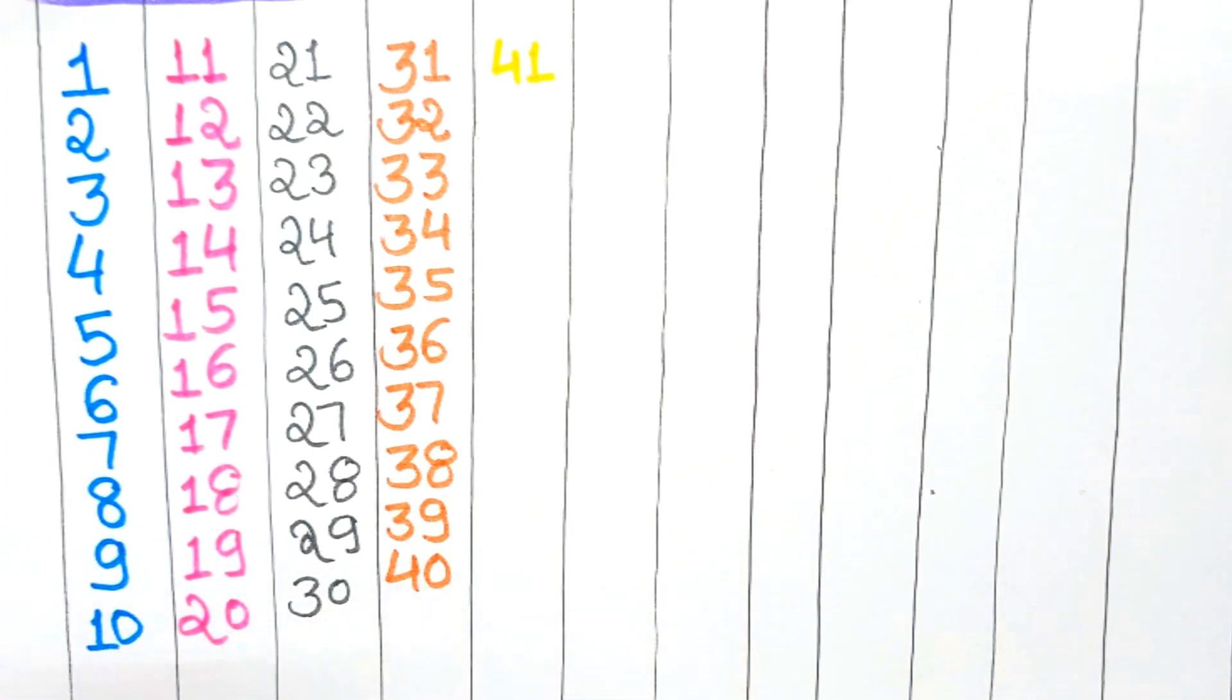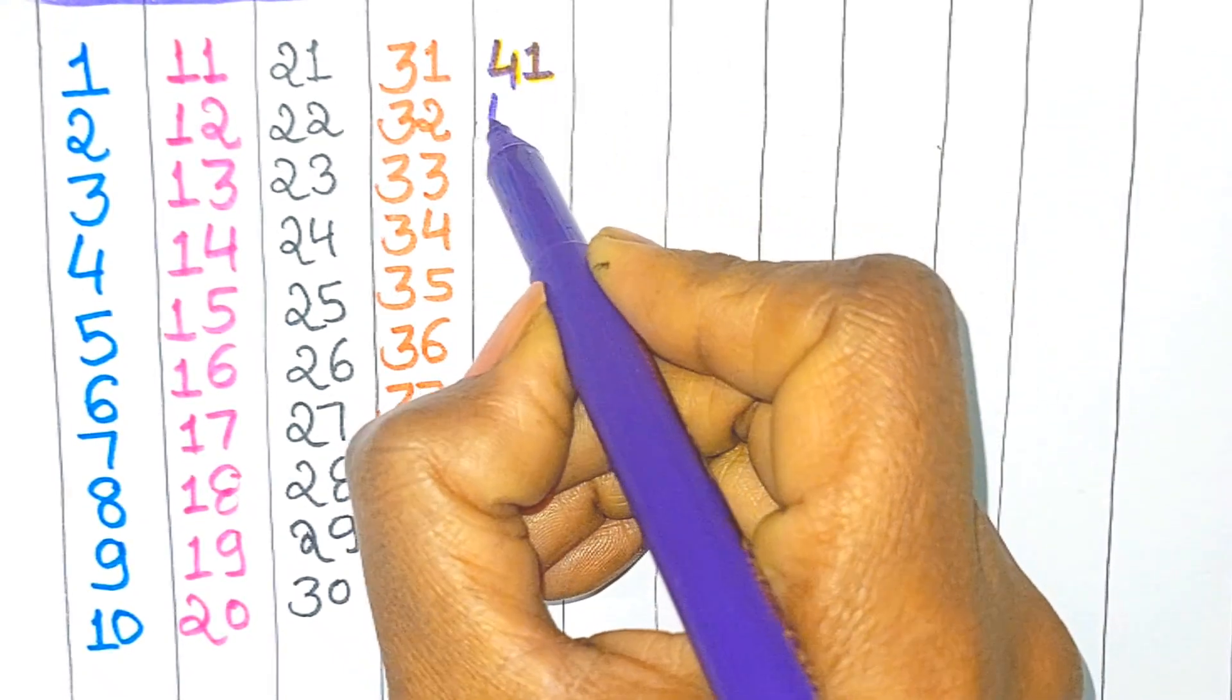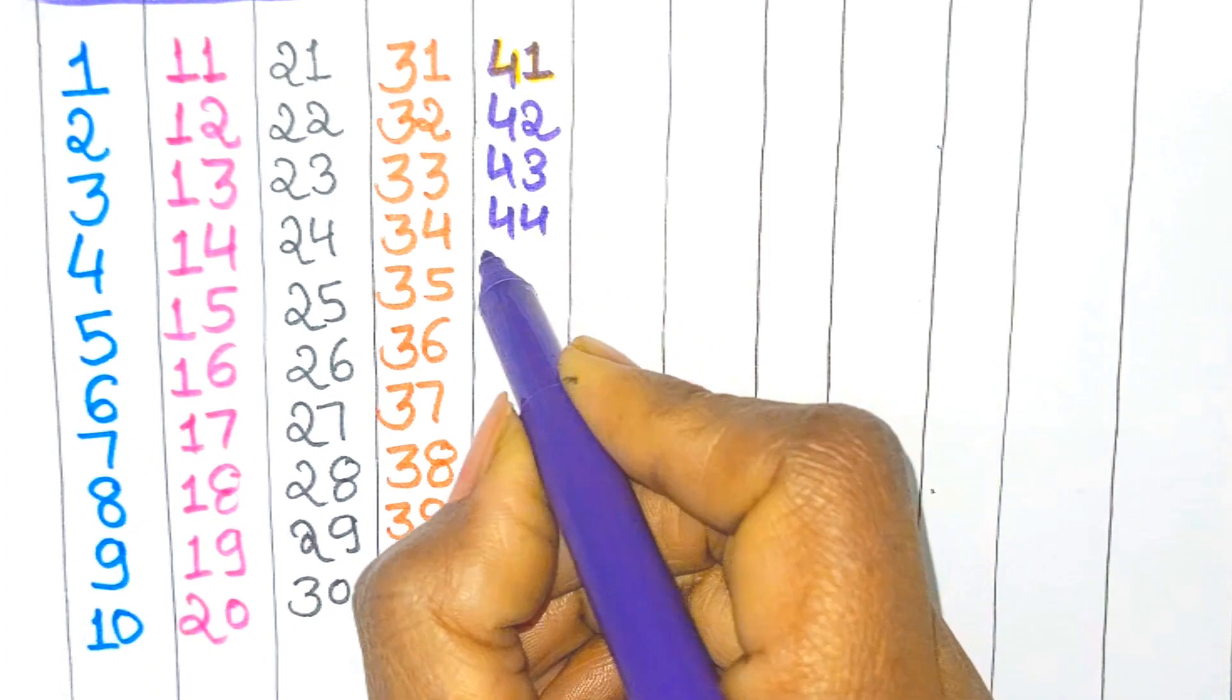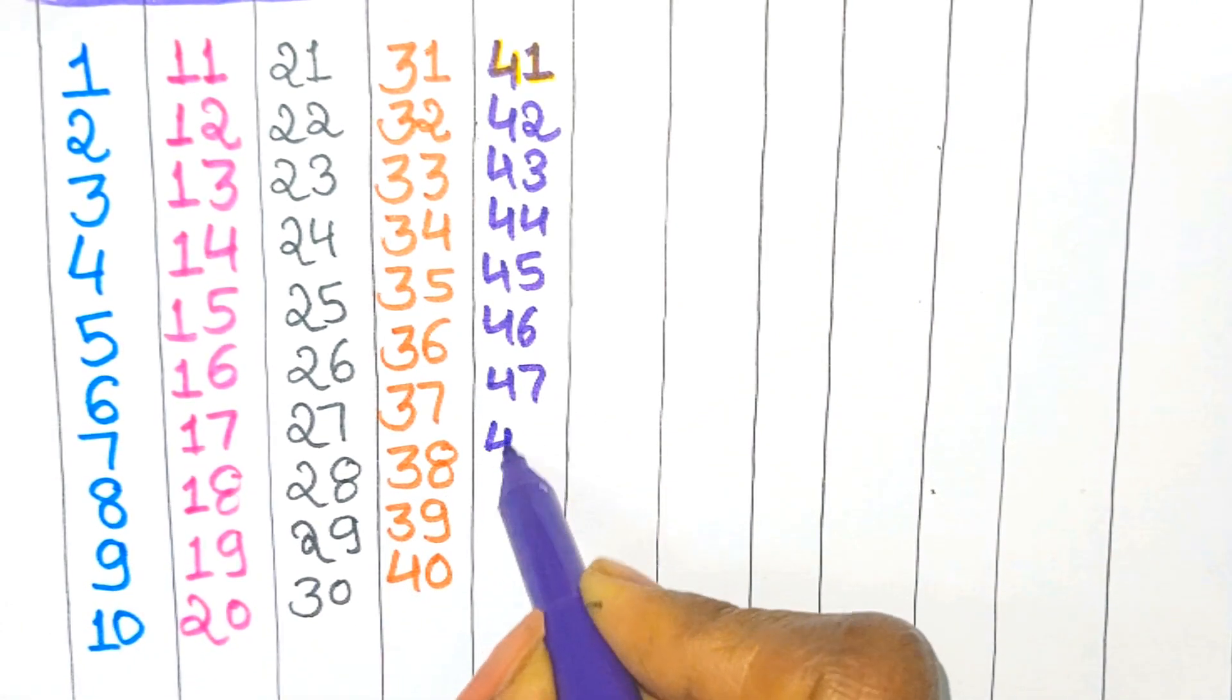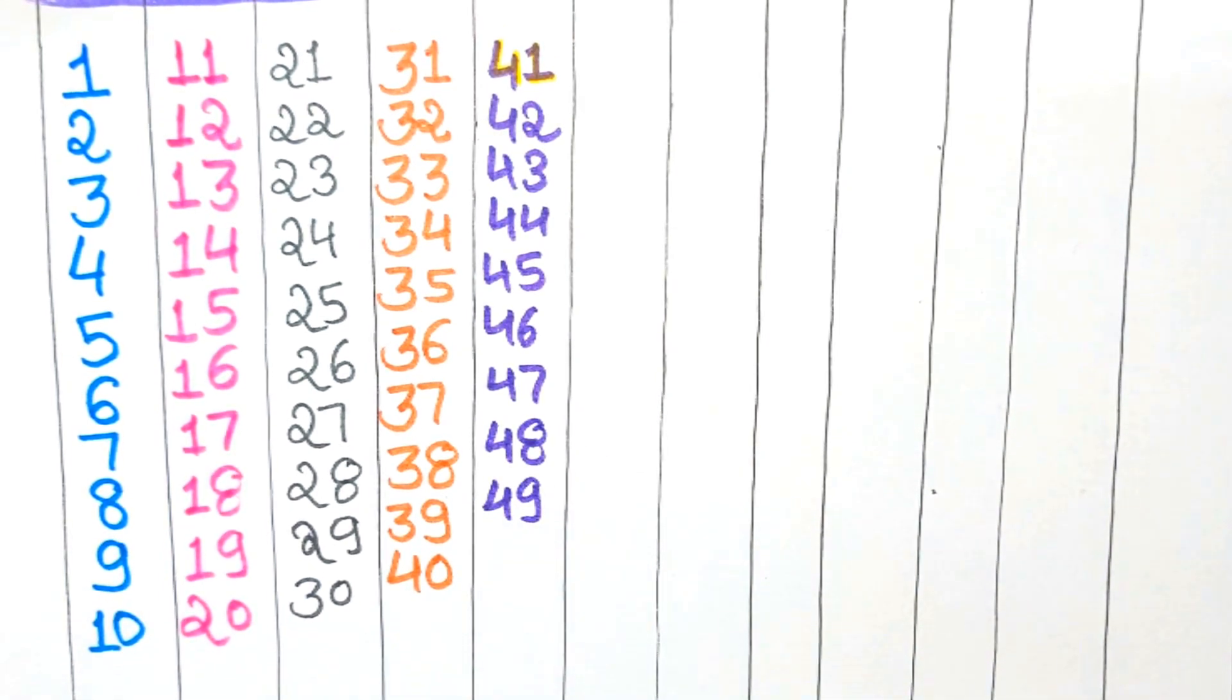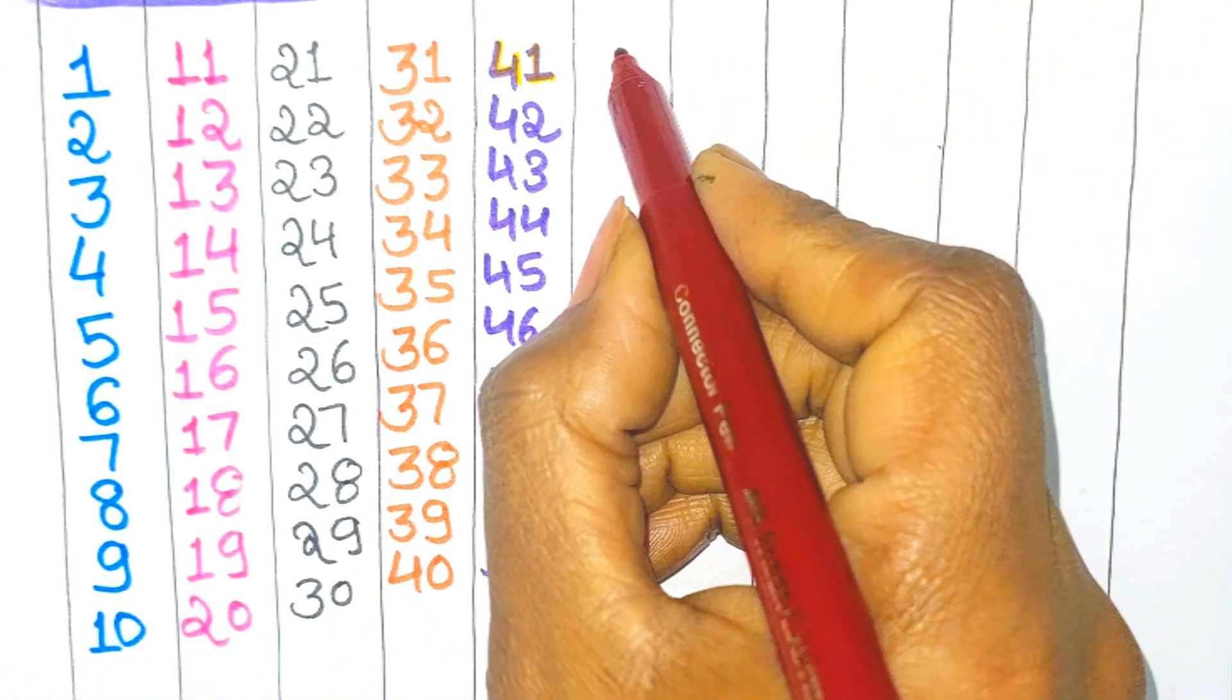Yellow color, four one - forty one. Yellow color is too much light color, so we use here purple color. Four one - forty one, four two - forty two, four three - forty three, four four - forty four, four five - forty five, four six - forty six, four seven - forty seven, four eight - forty eight, four nine - forty nine, five zero - fifty.